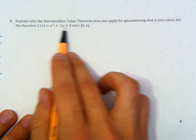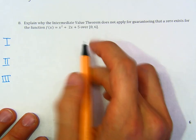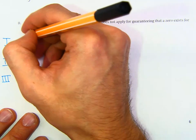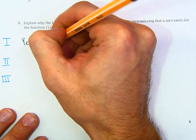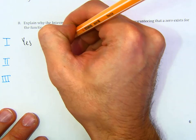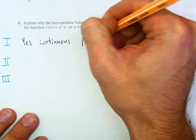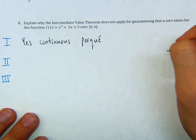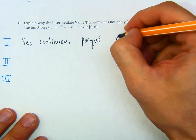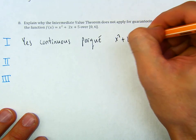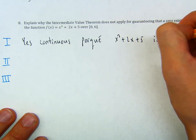Part 1: is this function continuous? Yes, it is continuous. Why? Because x squared plus 2x plus 5 is a polynomial.